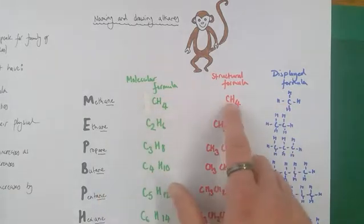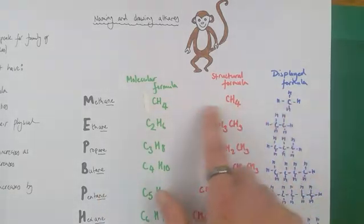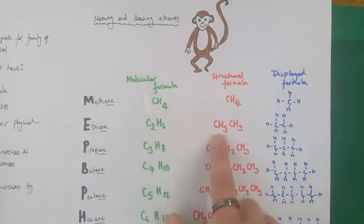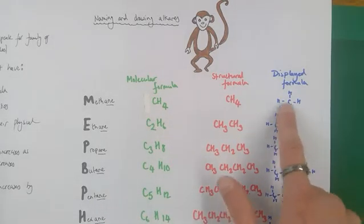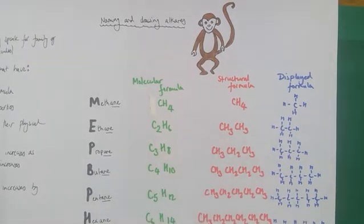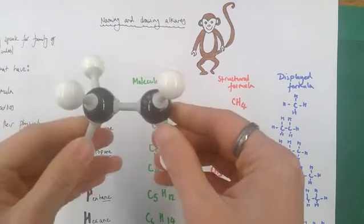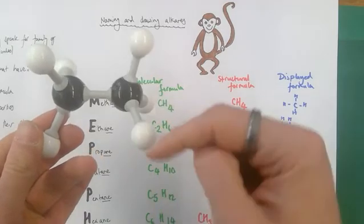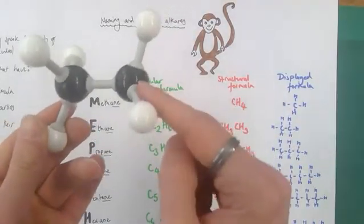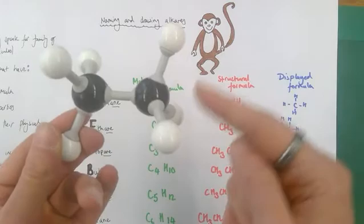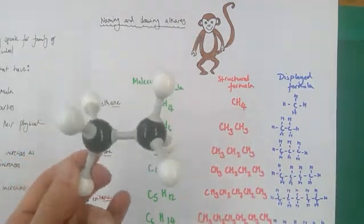So methane, pretty simplistic: CH4, CH4, and the displayed formula is CH4 again with the bonds shown. But the structural formula becomes more complicated. Ethane is C2H6. So two carbons, six hydrogens bonded to them, and one single bond between the two carbons. This structural formula shows it in a little bit less detail without the bonds shown, but it does show the arrangement still. You can see the first carbon is surrounded by three hydrogens, CH3, and the second carbon is also surrounded by three hydrogens, CH3. The maximum number of bonds a carbon can form is four. It's tetravalent, so it's never going to be more than four bonds around any one carbon.